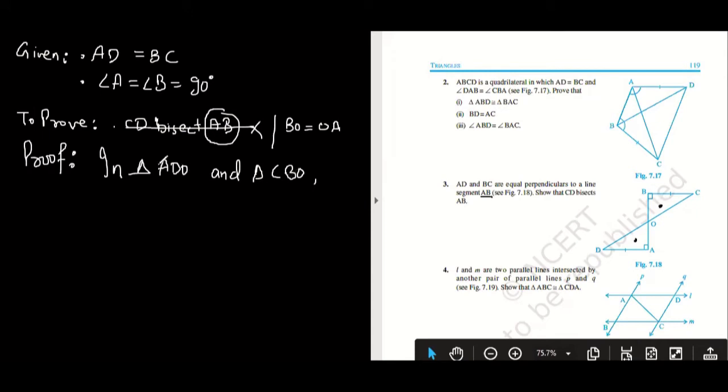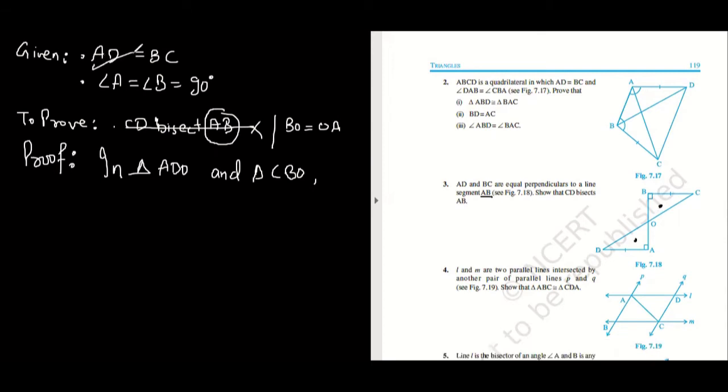Do you understand why I am taking these two triangles? Obviously these are the two triangles which are being formed, but this information and this information is available in these two triangles. That's why I am taking them. Because if the figure is complicated, then I have to decide which triangles I should take. Is this thing clear?